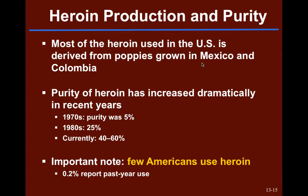Moving on to production of heroin — most of the heroin used in the United States is derived from poppies grown either in Mexico or Colombia. We've seen manufacturing changes over the past couple of decades. In the 70s, the purity of heroin available in the U.S. was about 5%, moving up through the 80s to the current time at about 40% to 60% purity — a really dramatic increase. But we still have a very small fraction of Americans who use heroin. About 0.2% report past-year use of any kind of heroin in the U.S.